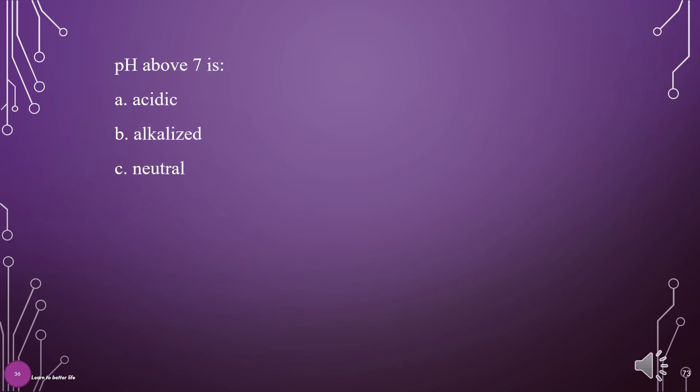pH above 7 is considered what? A. Acidic, B. Alkalized, C. Neutral. The answer is B: Alkalized.